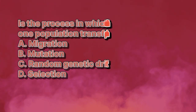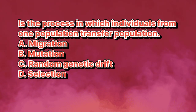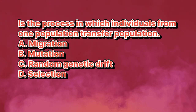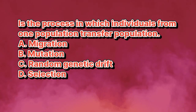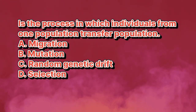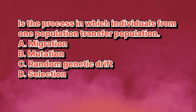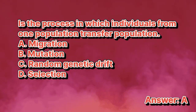What is the process in which individuals from one population transfer to another population? A. Migration. B. Mutation. C. Random Genetic Drift. D. Selection. The answer is letter...